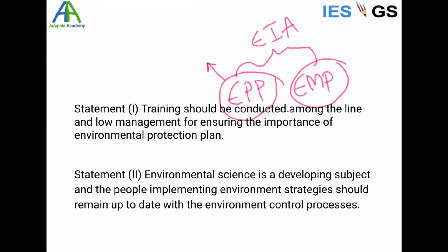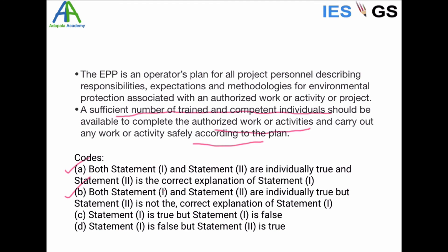Training should be conducted among the people implementing the project so they remain up to date with the process and strategy. Training is required, and the project implementer is supposed to keep people trained. Therefore, Statement two is the correct explanation of Statement one, so A is the answer.